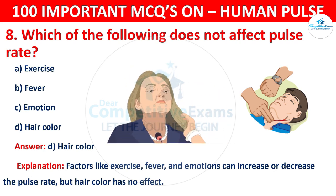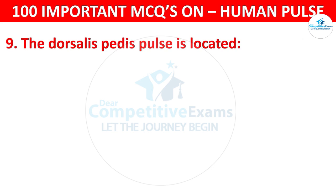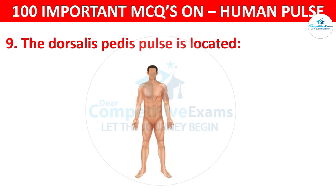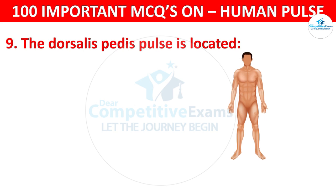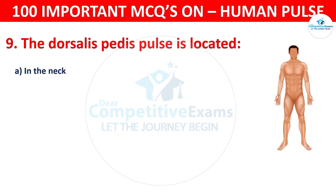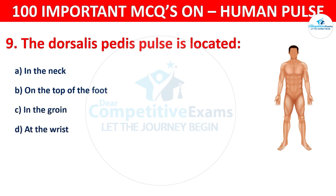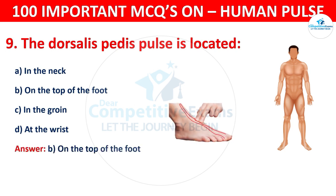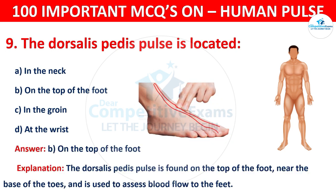Question number 9: The dorsalis pedis pulse is located — the options are: In the neck, On the top of the foot, In the groin, or At the wrist. The correct answer is B, that is on the top of the foot. The dorsalis pedis pulse is found on the top of the foot, near the base of the toes, and is used to assess blood flow to the feet.